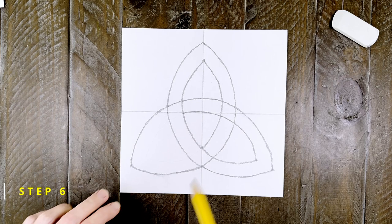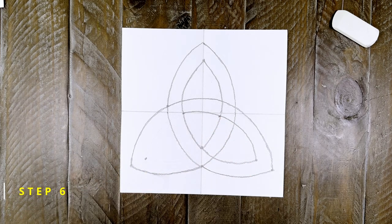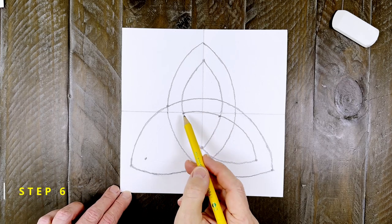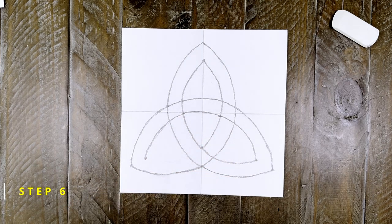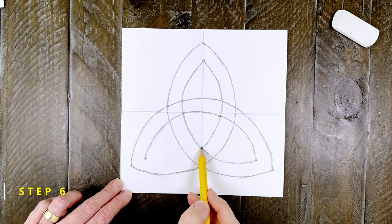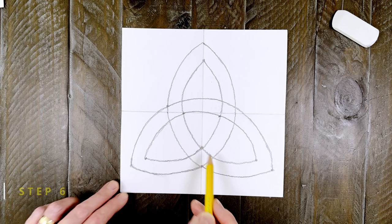Step number six. Start the last petal the same way with dots. Connect the top with a curve. And then do the same for the bottom. You'll see that some of the shared lines are already in place so you don't have to draw them all.